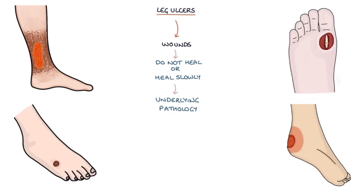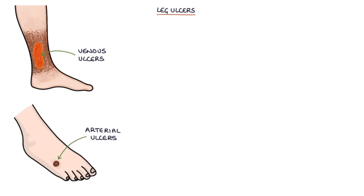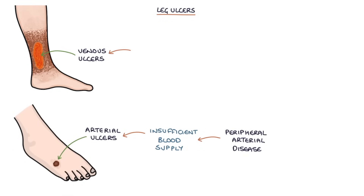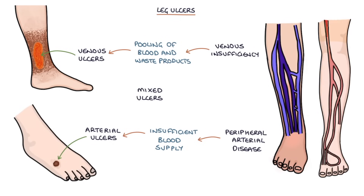There are four common types of skin ulcers: venous ulcers, arterial ulcers, diabetic foot ulcers, and pressure ulcers. Here we're going to mainly cover arterial and venous ulcers. Arterial ulcers result from insufficient blood supply to the skin due to peripheral arterial disease. Venous ulcers occur due to pooling of blood and waste products in the skin secondary to venous insufficiency. Mixed ulcers are a combination of arterial and venous disease causing the ulcer.